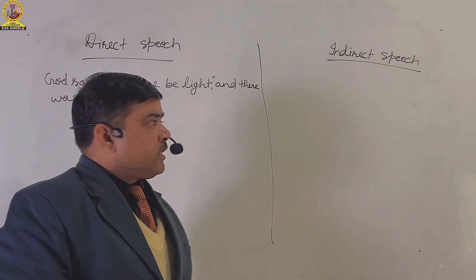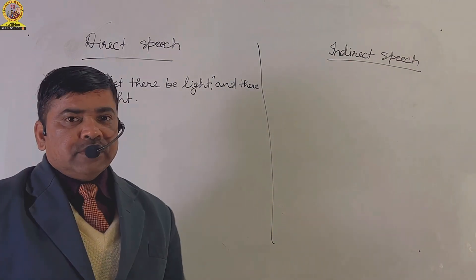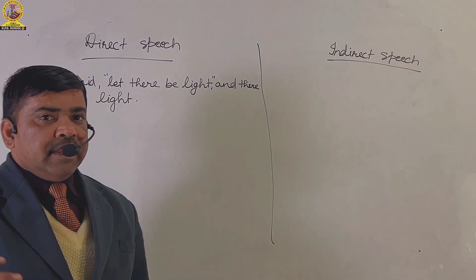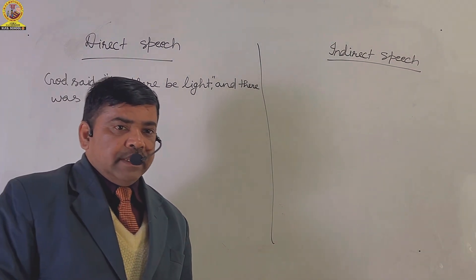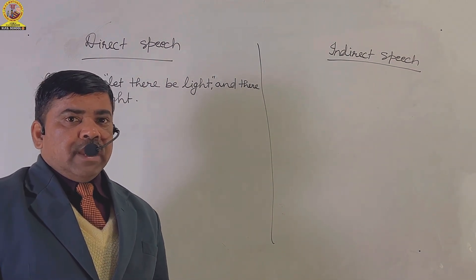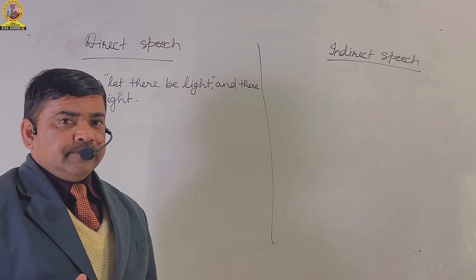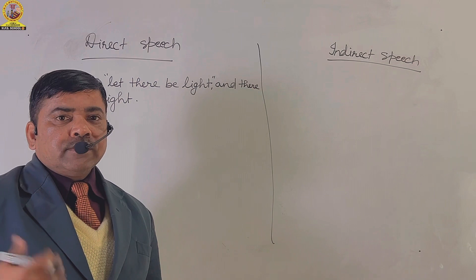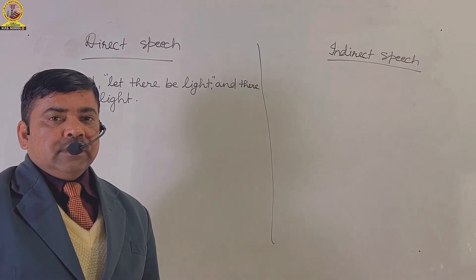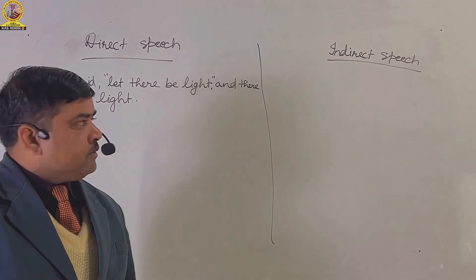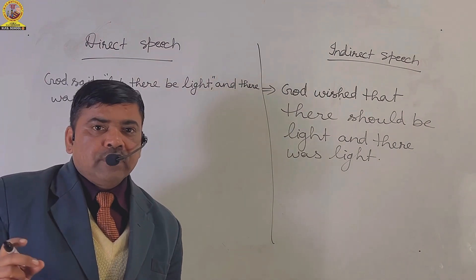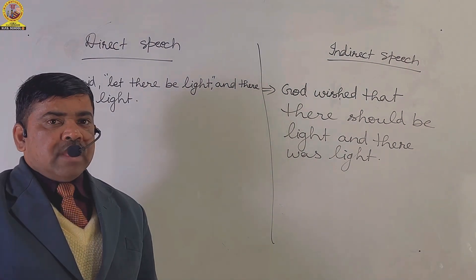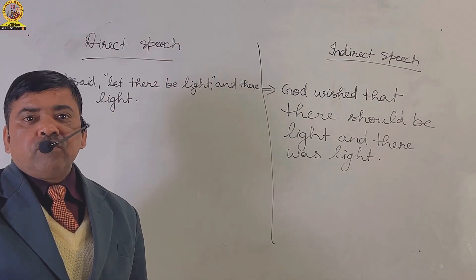Friends, I have taken a sentence in direct speech in which the reported speech is 'Let there be light.' This sentence denotes wish. So, in place of 'said,' we will use 'wished' in the indirect speech. The indirect speech of the given sentence will be: God wished that there should be light and there was light.